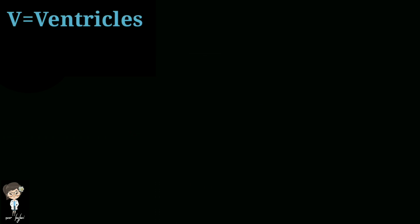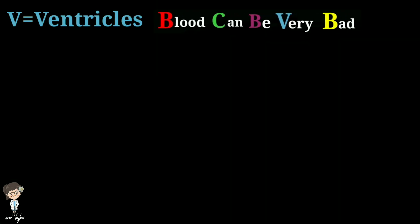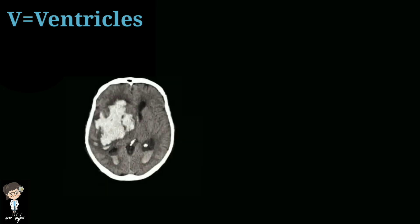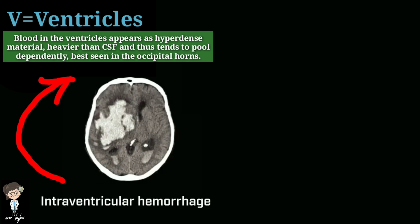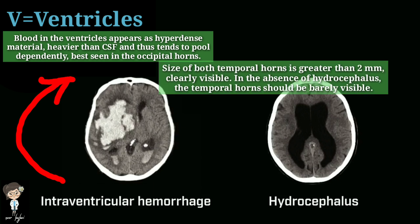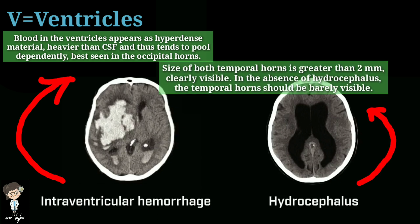The next V in the mnemonic stands for Ventricles. Intraventricular hemorrhage can occur, in which blood in ventricles appears as hyperdense material heavier than CSF and tends to pool dependently, best seen in the occipital horns. The second thing to look for is hydrocephalus, in which the size of both temporal horns is greater than 2 millimeters and clearly visible.